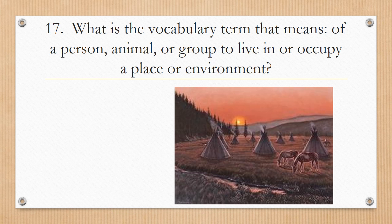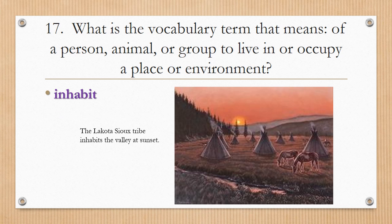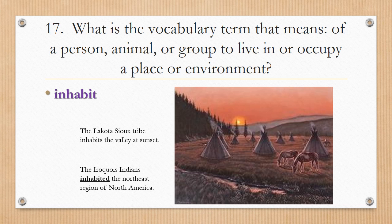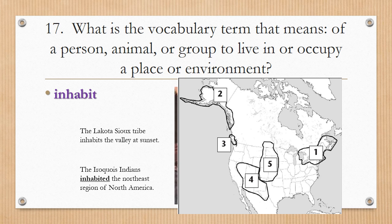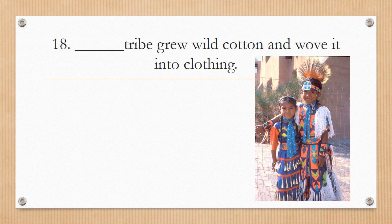Number seventeen: What is the vocabulary term that means of a person, animal, or group to live in or occupy a place or environment? Inhabit. You can see the Lakota Sioux tribe inhabits the valley at sunset. The Iroquois Indians inhabited the northeast region of North America, as you can see with number one on the map.